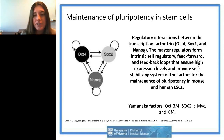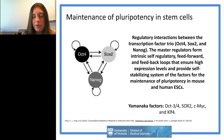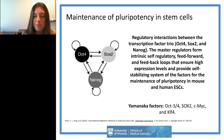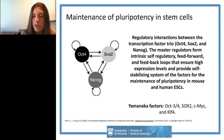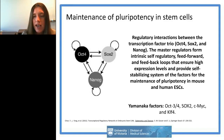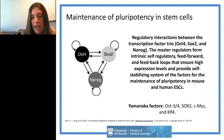Before getting into neural differentiation, I want to quickly talk about how pluripotent stem cells maintain pluripotency, because I'll first discuss studies done with mouse cells and then how we translate those to humans. To maintain pluripotency, there's a trio of transcription factors — OCT4, SOX2, and NANOG — that feed back on each other to maintain high levels of expression and the ability to differentiate into any cell type.